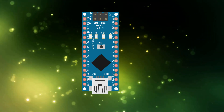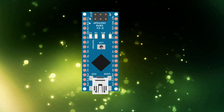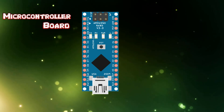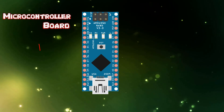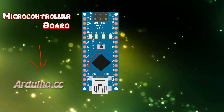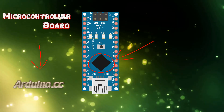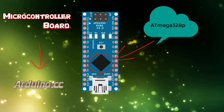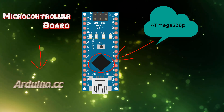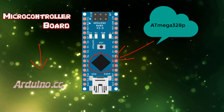So let's get started with Arduino Nano. Arduino Nano is a microcontroller board designed by Arduino.cc. The microcontroller used in Arduino Nano is the ATmega328P. Let's have a look at its pinout and basic features.